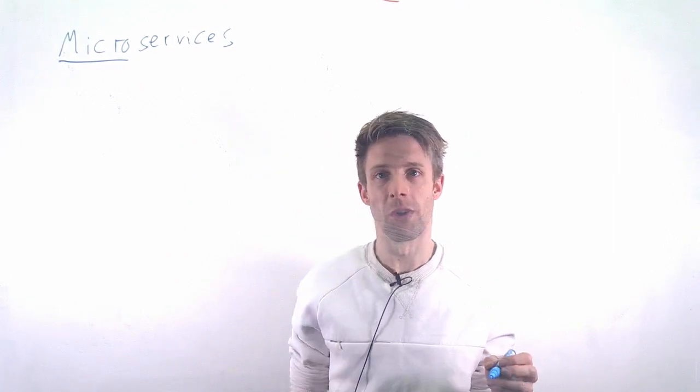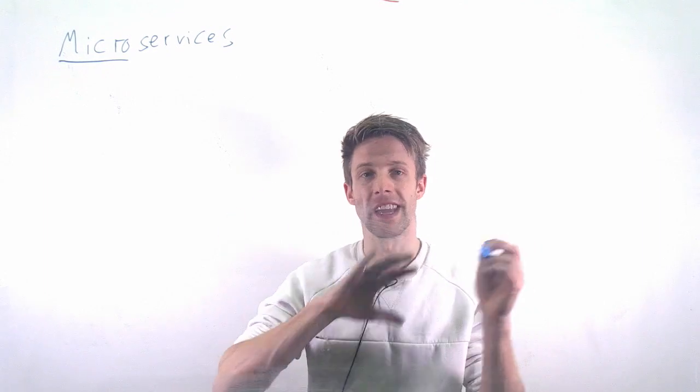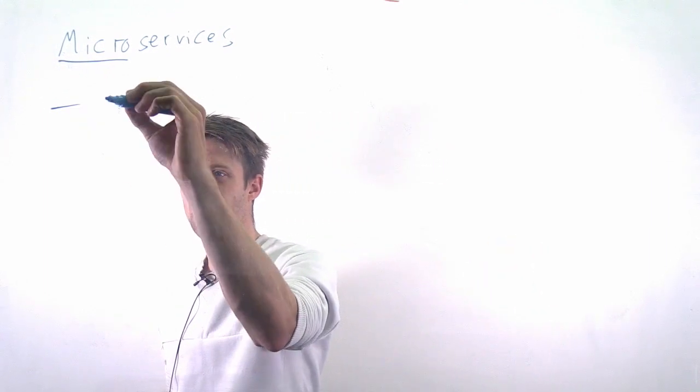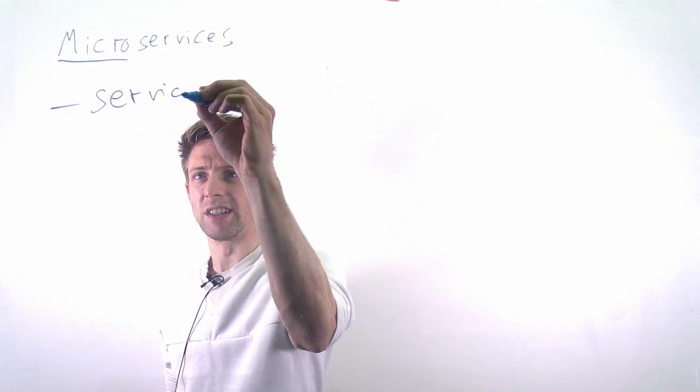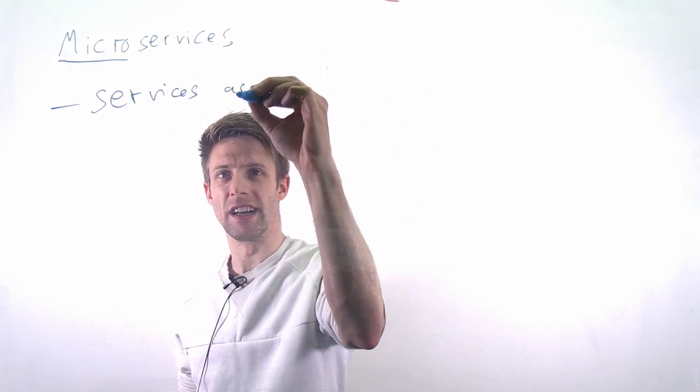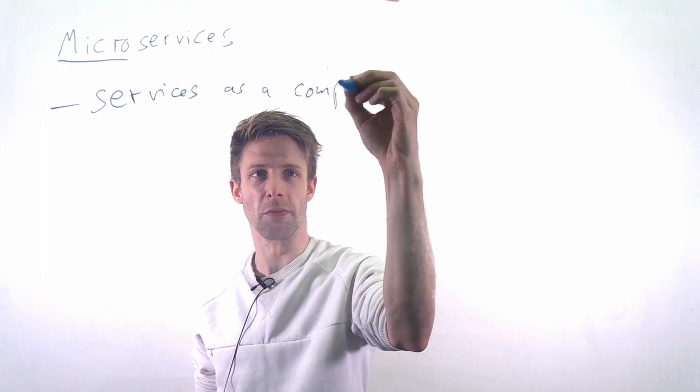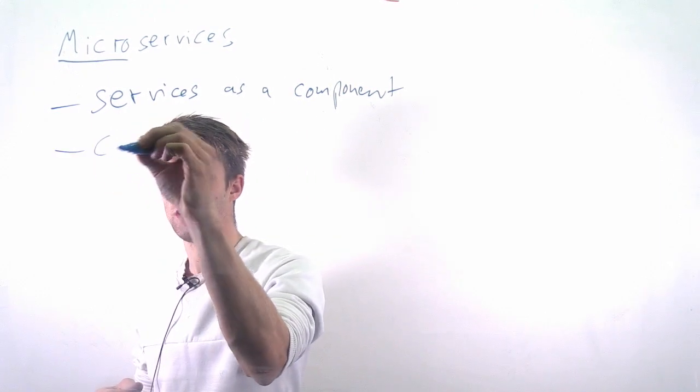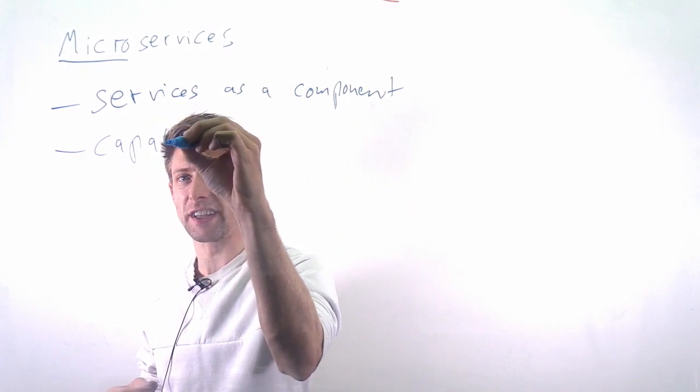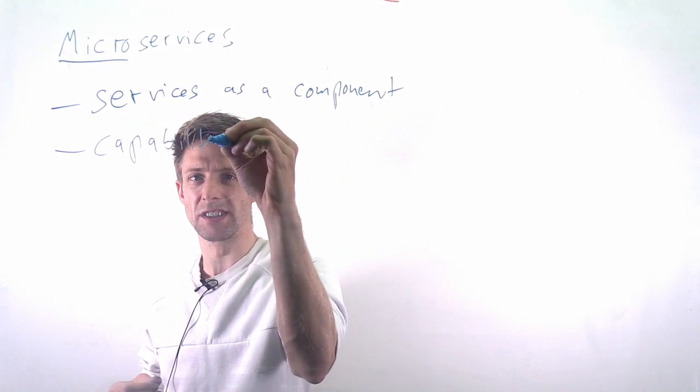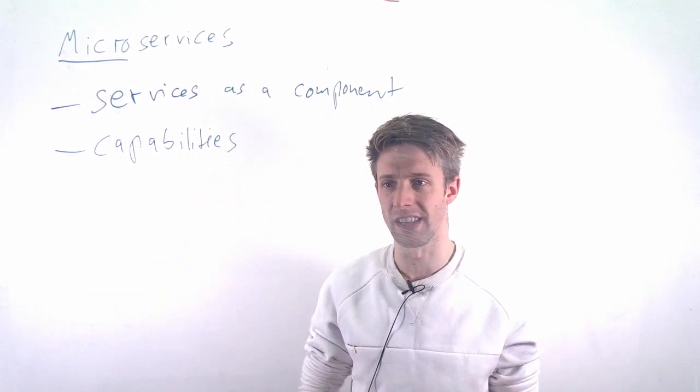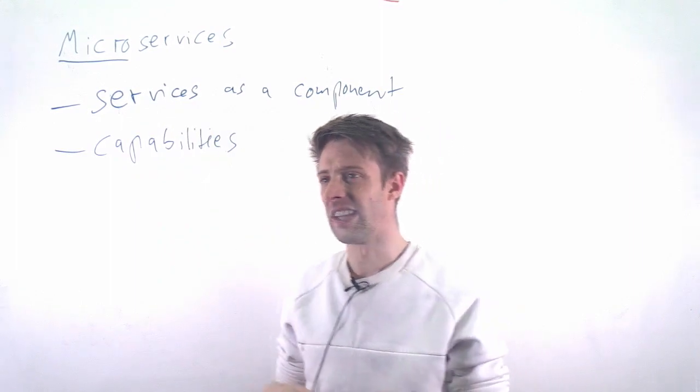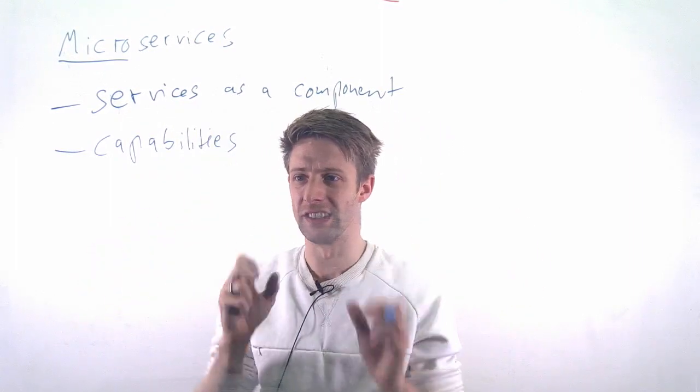So somehow it's a small service and your application is composed of all these different ones. But generally they agree, the different people, that a service should be a component, some kind of component that can be deployed independently. It should somehow be organized around this idea of capabilities, so it offers some kind of business value, some kind of functionality, every single of these services. And then the product is the composition of these different services.